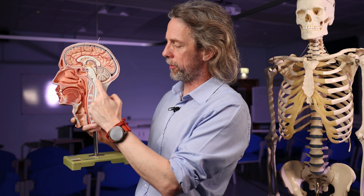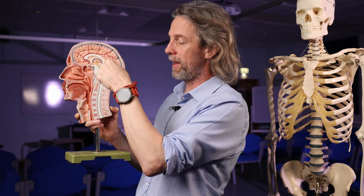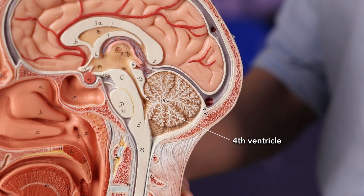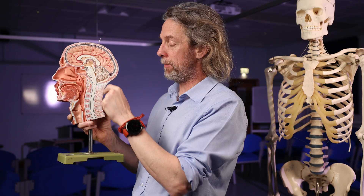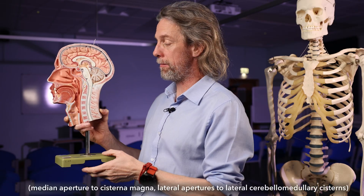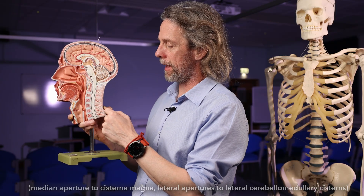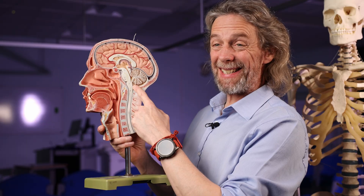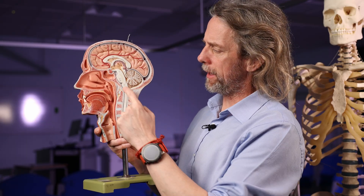The reason the cisterna magna is so important is because the cerebrospinal fluid flows through the ventricular system inside the brain to the fourth ventricle. That CSF can then leave the fourth ventricle through two lateral apertures and a median aperture, and flows to the cisterna magna — so it's the first place to collect a lot of that CSF. Running through here we've got cranial nerves 9, 10, and 11 leaving the cranial cavity.